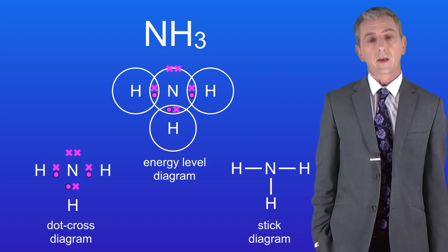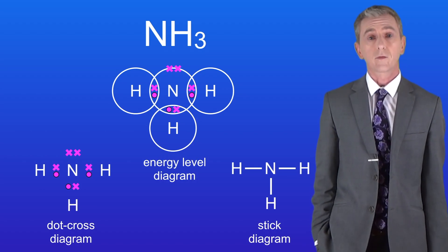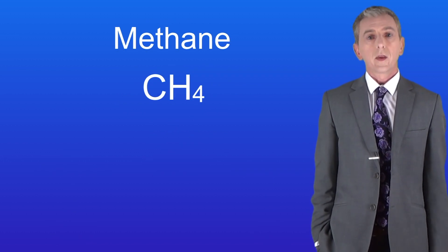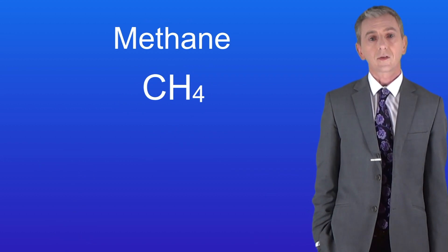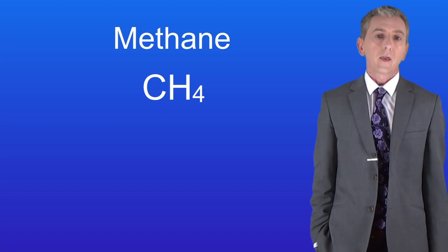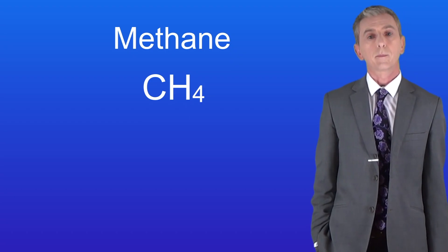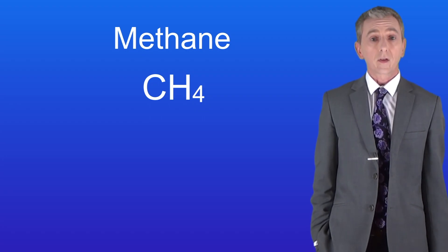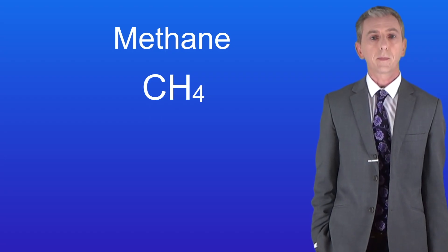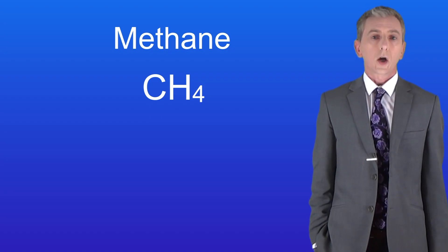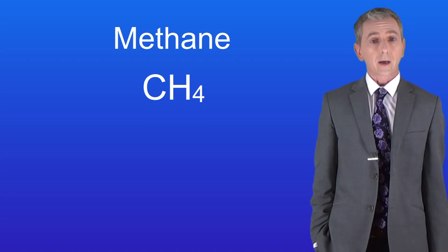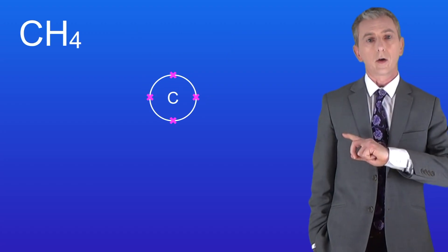Hopefully you're now getting the idea that covalent bonding is relatively straightforward. Here's the final molecule in this video. This is methane, which has the formula CH₄. That means that a methane molecule has one carbon atom bonded to four hydrogen atoms. We know that this is a covalent molecule because both carbon and hydrogen are non-metal elements. Carbon atoms have six electrons in total, so they've got four electrons in their outer energy level.